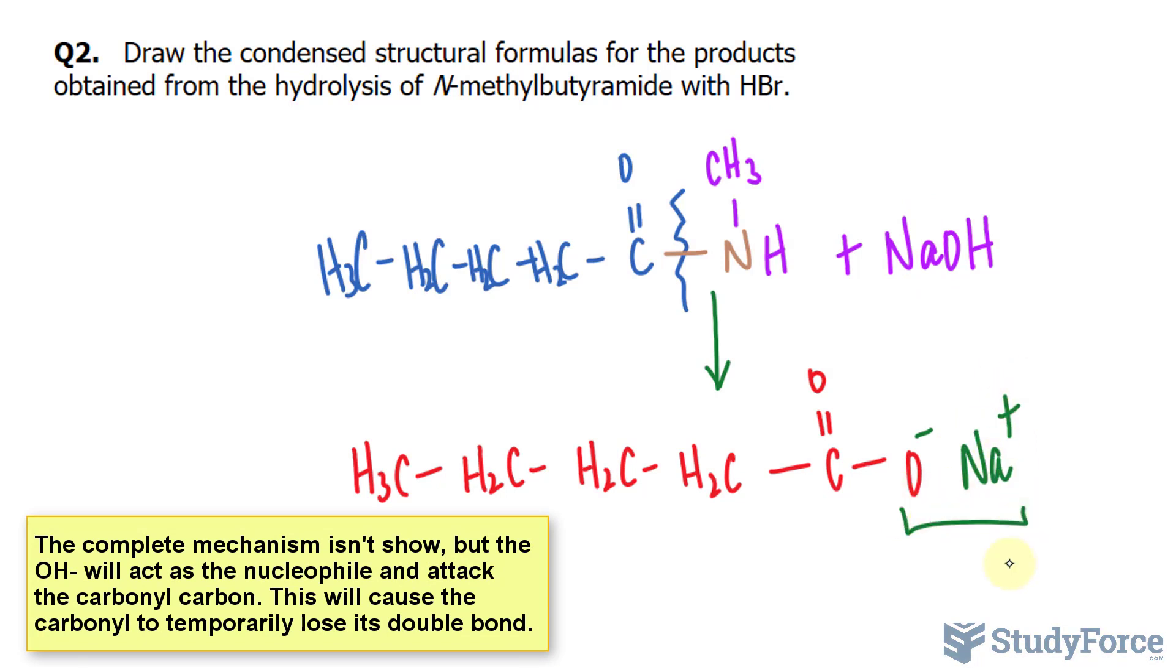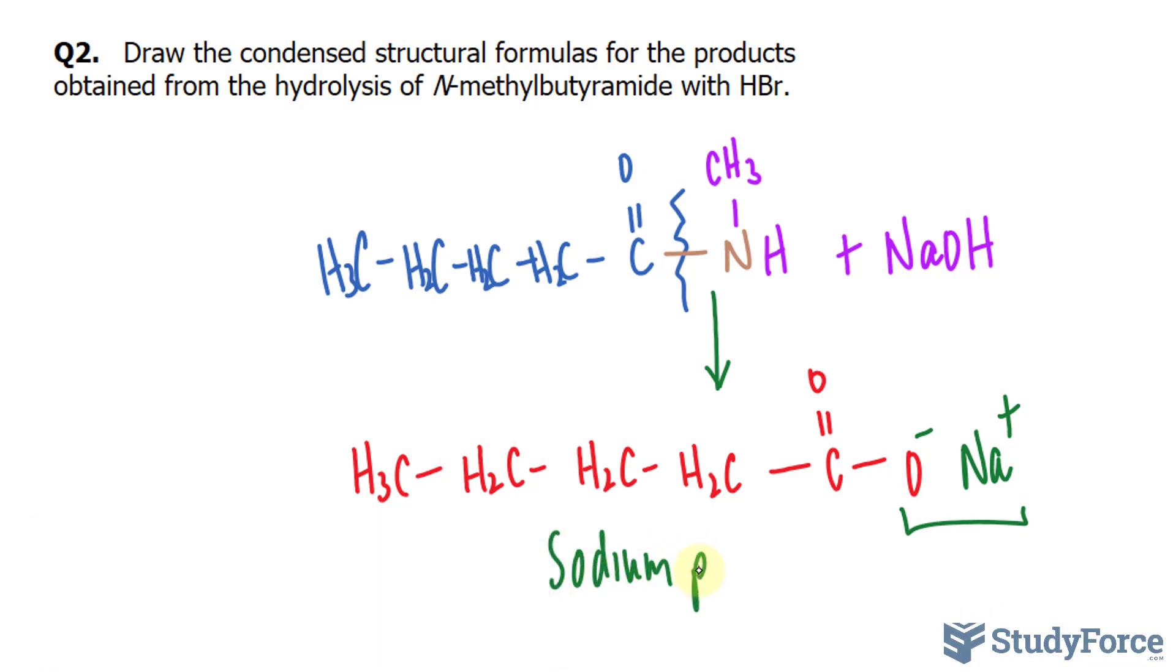The sodium molecule, given that it's positive, will be attracted to this end, forming sodium pentanoate. Notice that we dropped the amide suffix and replaced it with O-A-T-E, which is the suffix we use to represent carboxylates, the ion version of carboxylic acids.